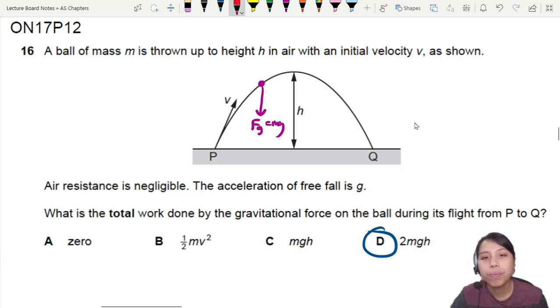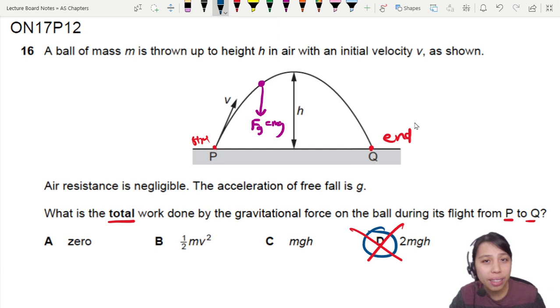Well, no. Don't choose 2. Because you are looking at the total from P to Q. You start here at P and you end here at Q. So what is the total change in height from P to Q? Zero, right? Zero change in height.